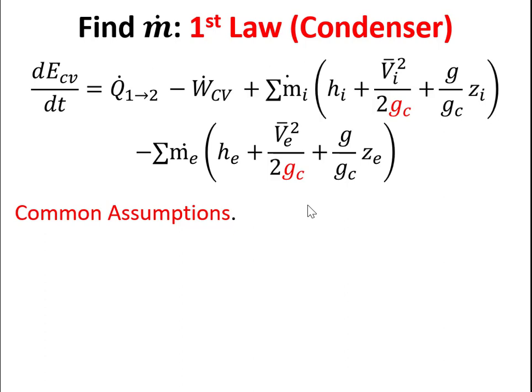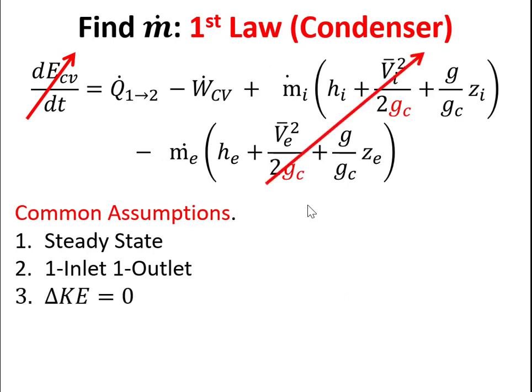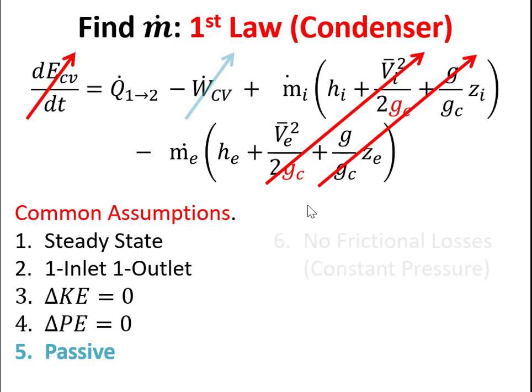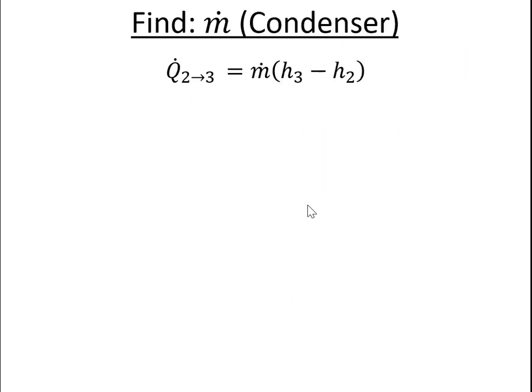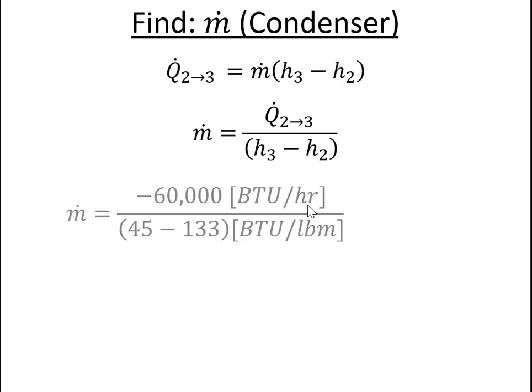My first law in imperial units looks like this. I'm at steady state, one inlet, one outlet, no kinetic or potential energy changes. I'm going to assume that the process is passive when I look at the condenser and that there's no friction losses and no heat loss in the lines. When I'm looking at the condenser, then I get an expression for M dot. It's Q2 to 3 over H3 minus H2. So I'm using the condenser here because I'm told how much heat is being exhausted here. So now I know what my values are and I put them into my calculator and I can find a mass flow rate of about 682 pound mass per hour.